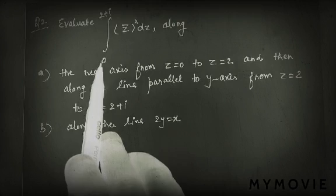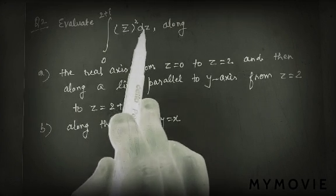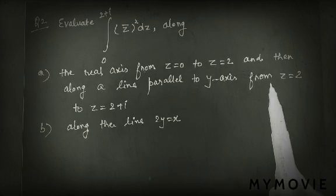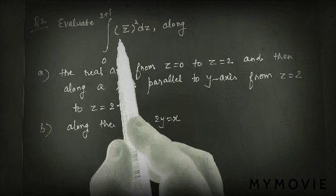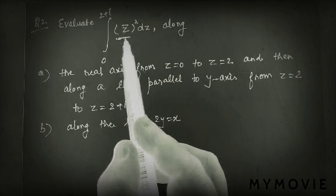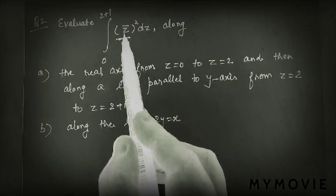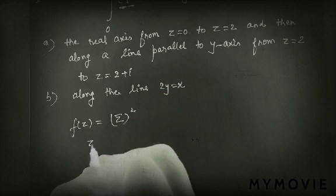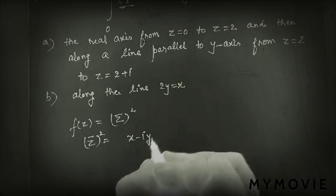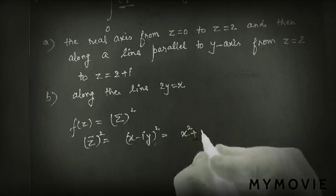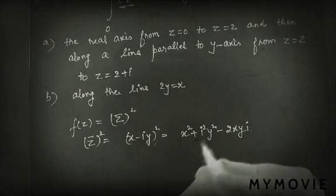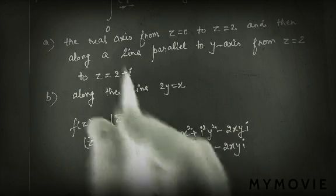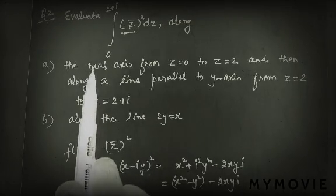Next question: evaluate the integral from 0 to 2+i of |z̄|² dz, along the real axis from z equals 0 to z equals 2, and then along a line parallel to the y-axis from z equals 2 to z equals 2+i. Here f(z) is given as z̄². We can write z̄² as (x − iy)² equals x² + i²y² − 2xyi, and since i² equals −1, we get x² − y² − 2xyi. This gives us the real part and imaginary part.